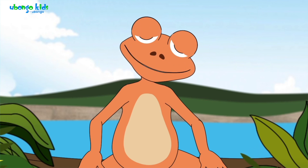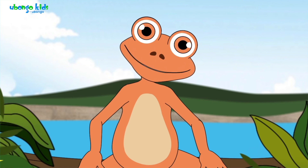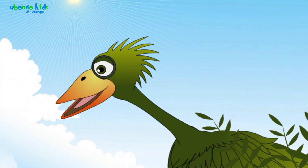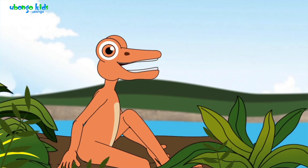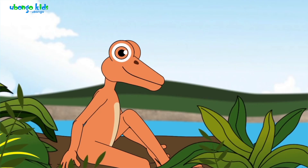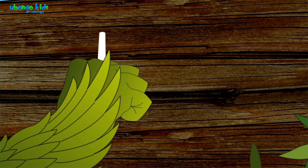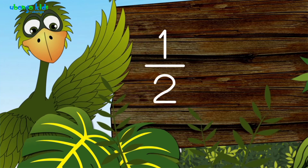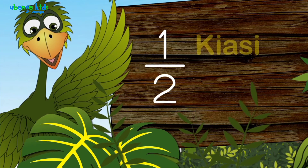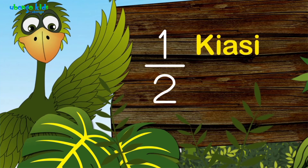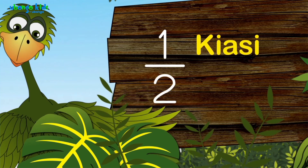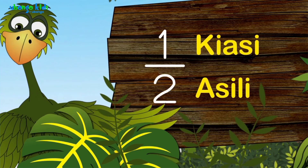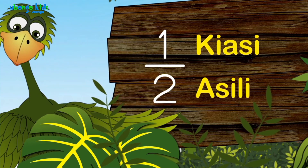Well, we sung about halves. Do you know the meaning of one half? Yes — nusu kwa Kiswahili. That's right. Nusu tunantika hivi? Namba ya juu inaitwa kiasi. Namba ya chini inaitwa asili. Kiasi, asili. Kiasi, asili.